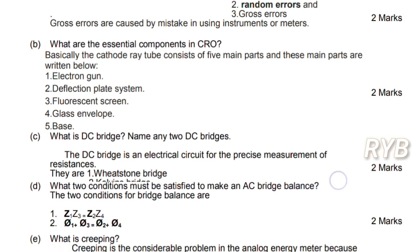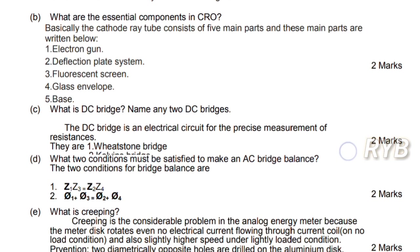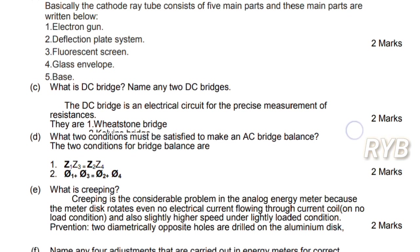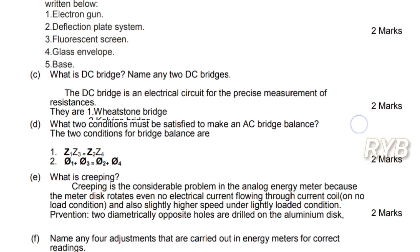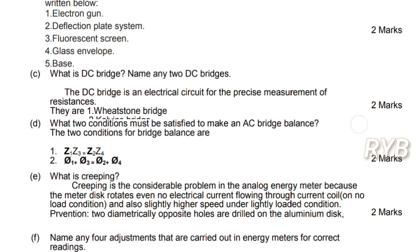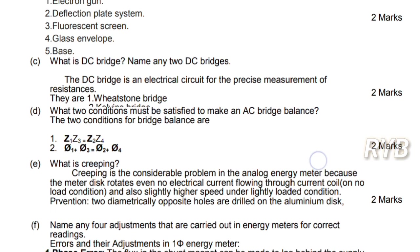What is creeping? Creeping is an error in an energy meter. It is a considerable problem because the meter disc rotates even when no electrical current is flowing through the current coil. To prevent creeping error, two opposite holes are drilled on the aluminum disc to reduce it.